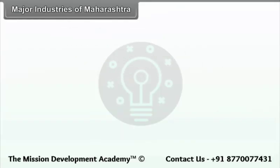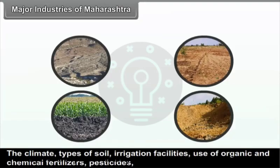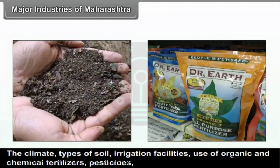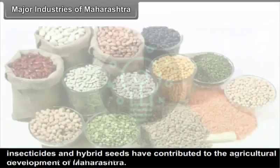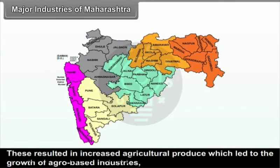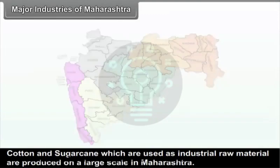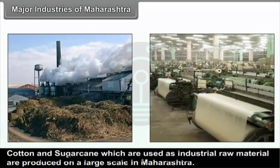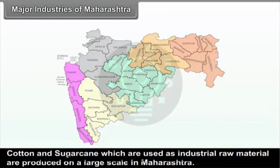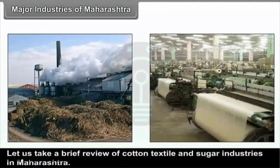The climate, types of soil, irrigation facilities, use of organic and chemical fertilizers, pesticides, insecticides and hybrid seeds have contributed to the agricultural development of Maharashtra. These resulted in increased agricultural produce, which led to the growth of agro-based industries, particularly sugar and cotton textile industries. Cotton and sugarcane, used as industrial raw materials, are produced on a large scale in Maharashtra, making raw material easily available.